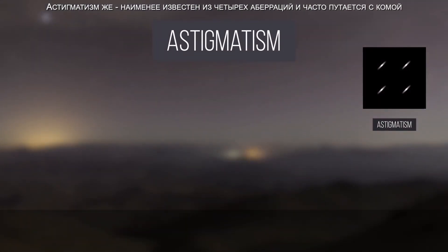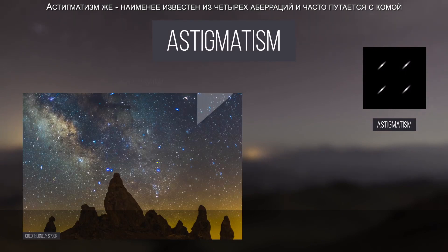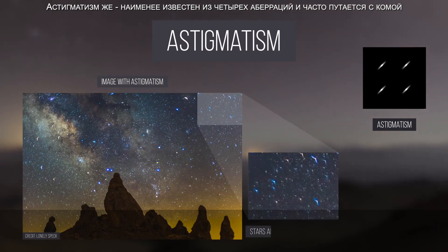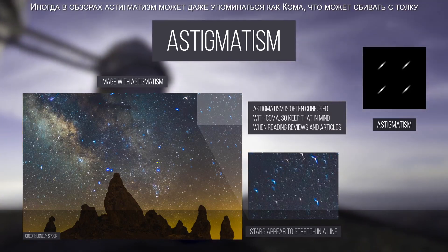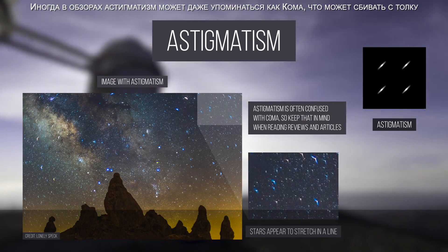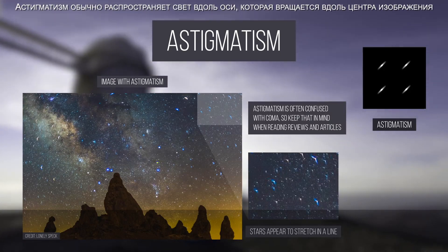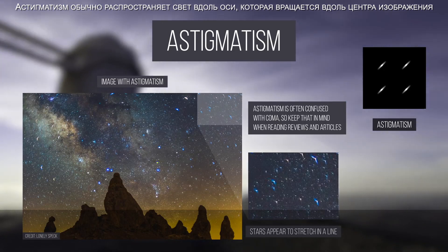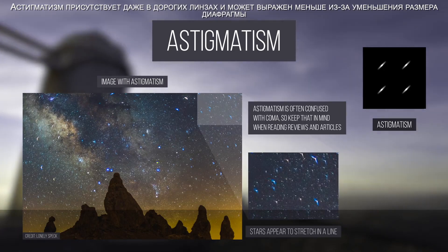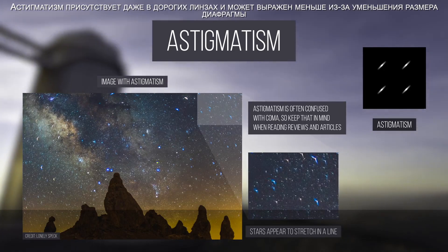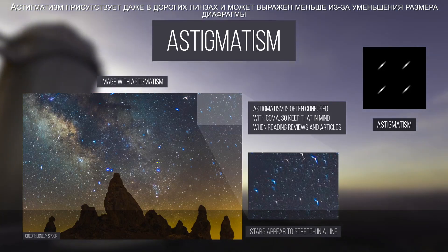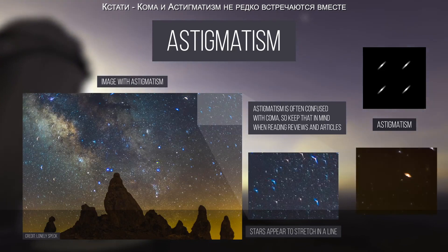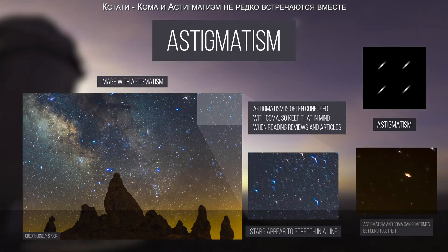Astigmatism is probably the least well-known of the four aberrations and is often confused for coma. Sometimes astigmatism may even be referenced as coma in reviews, which can be confusing. Astigmatism usually spreads light along an axis that is rotated along the center of the image. It is common even in expensive lenses and can be reduced by decreasing your aperture size. Coma and astigmatism can even be found together in some lenses.